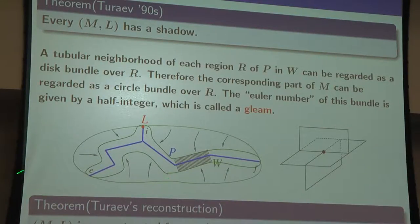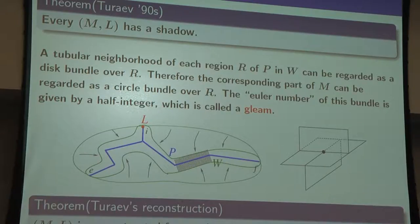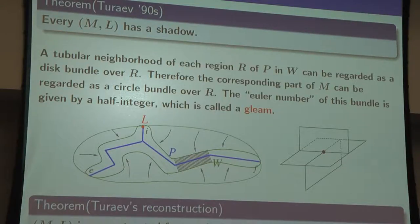Reconstruction: every manifold and link can be reconstructed from a shadow with the information of the gleam, uniquely. So if you have a polyhedron and on each face you assign a half-integer, then you can uniquely restore the manifold.